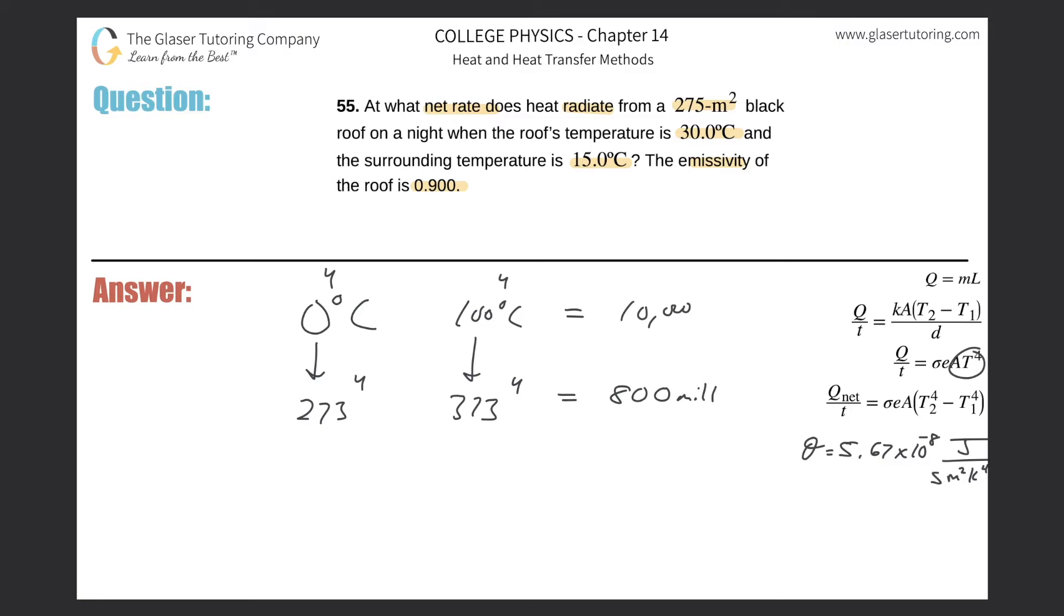Since these temperatures are to the fourth power, they better be in Kelvin. Anytime you have a temperature by itself, it also better be in Kelvin, not Celsius. The only time you're allowed to substitute Celsius in for Kelvin is when you have a temperature difference that does not raise to any power, just straightforward. And I just proved it to you why.